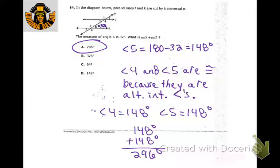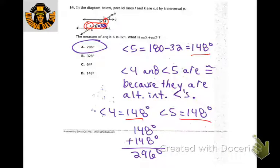We know that angle 6 is 32. That means angle 5 — it's a linear pair, so they have to add up to 180. So 180 minus 32 is 148. Angle 5 is 148, and so is angle 4 — these two are alternate interior angles, so they're equal. Both are 148. Adding them together, we get 296.